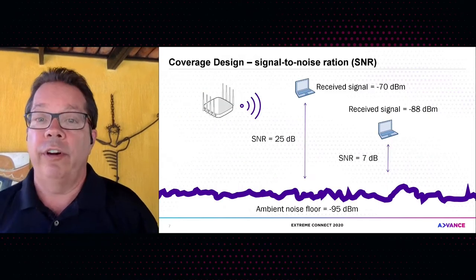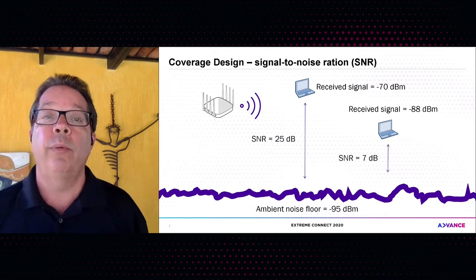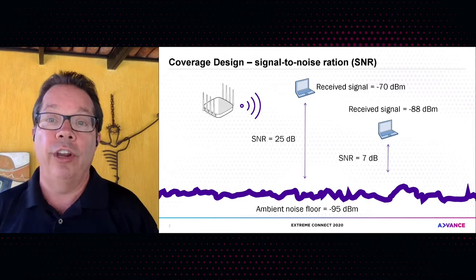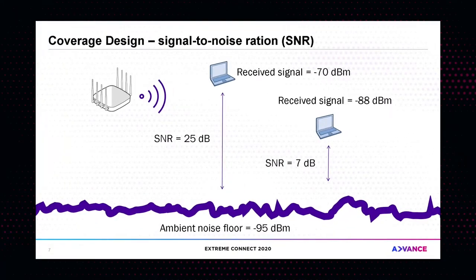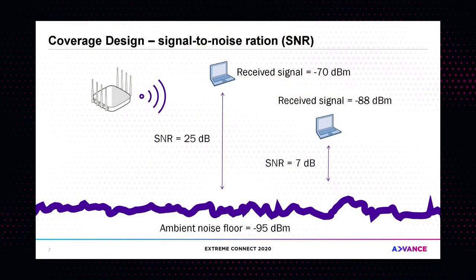There are even more important metrics than signal strength. To me, the most important is the signal-to-noise ratio. SNR is not really a ratio — it's a comparison of the received signal to the ambient noise floor. The noise floor is just background noise from anything electromagnetic: machinery, electrical equipment, computer monitors, even the sun. For example, if your noise floor is -95 dBm and your received signal is -70 dBm, your SNR is 25 dB — that's good.